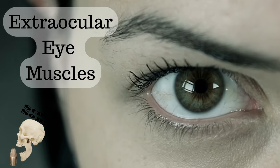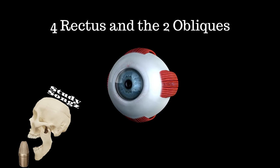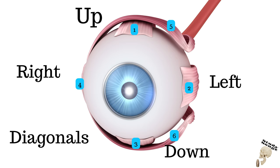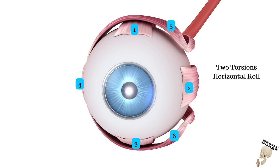Four rectus to the two obliques — I love the eye muscle anatomy. Extra ocular eye muscles make eye movements and make eyes roll. Six eye muscles for eye control: up, down, left, right, diagonal. With two torsions, fours on a roll.